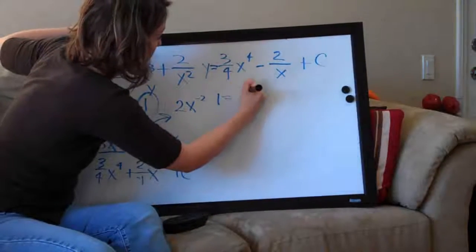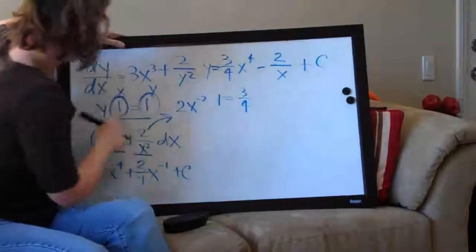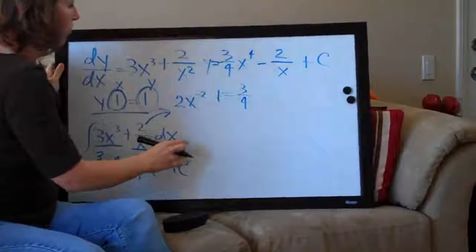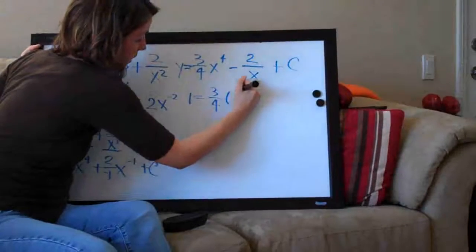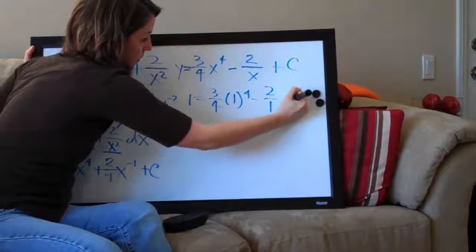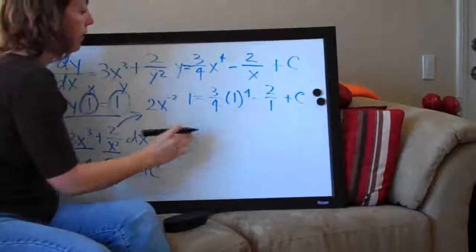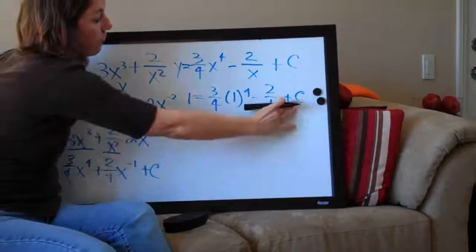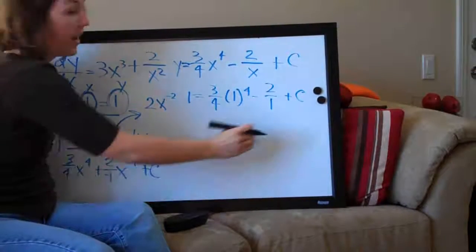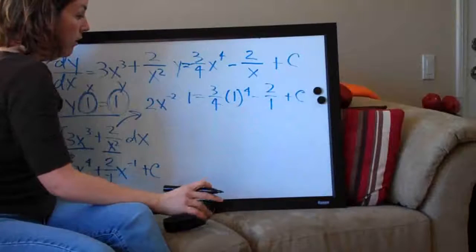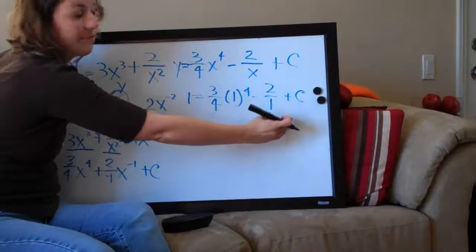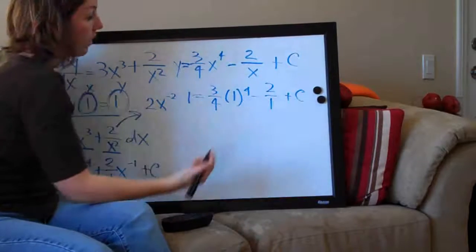So we say 1 equals 3 fourths times 1 to the fourth minus 2 over 1 plus C. The whole point of doing this is to solve for C, because we want to come up with a final equation with no C left in it. We plugged in for y and x so that the only variable remaining is C.